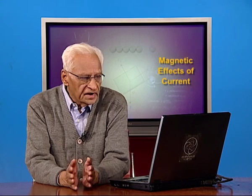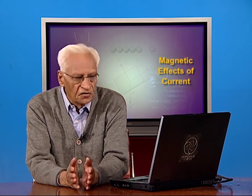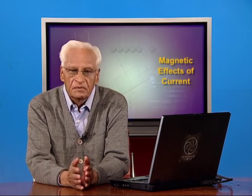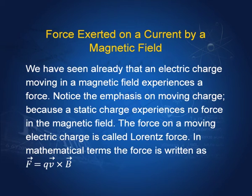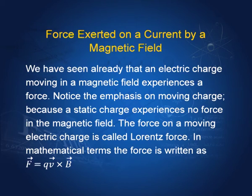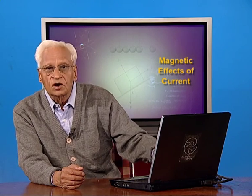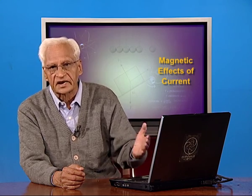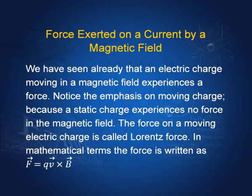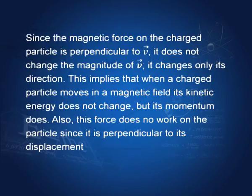We have already seen that an electric charge moving in a magnetic field experiences a force called the Lorentz force. That force is given by F equal to q v cross B. The emphasis is on moving charge, because if the charge is static, then the magnetic field has no force on it.